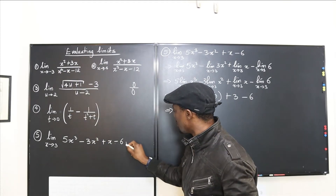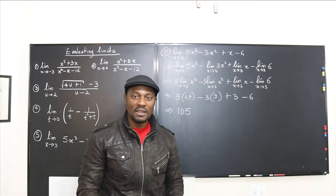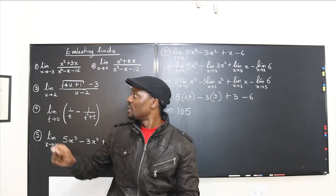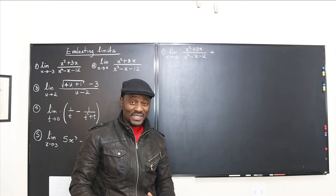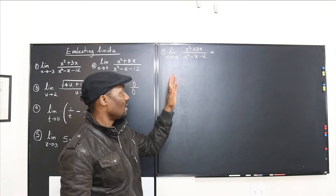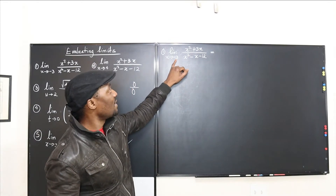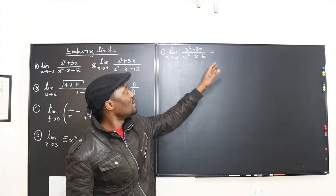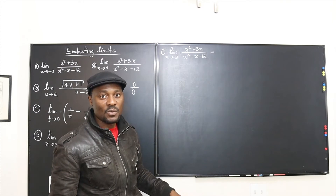So let's move on to the first example that has to do with this. The limit is 105 — that one is done. Let's go to the next one: as x goes to negative three, you have this function. We want to know what the limit is.